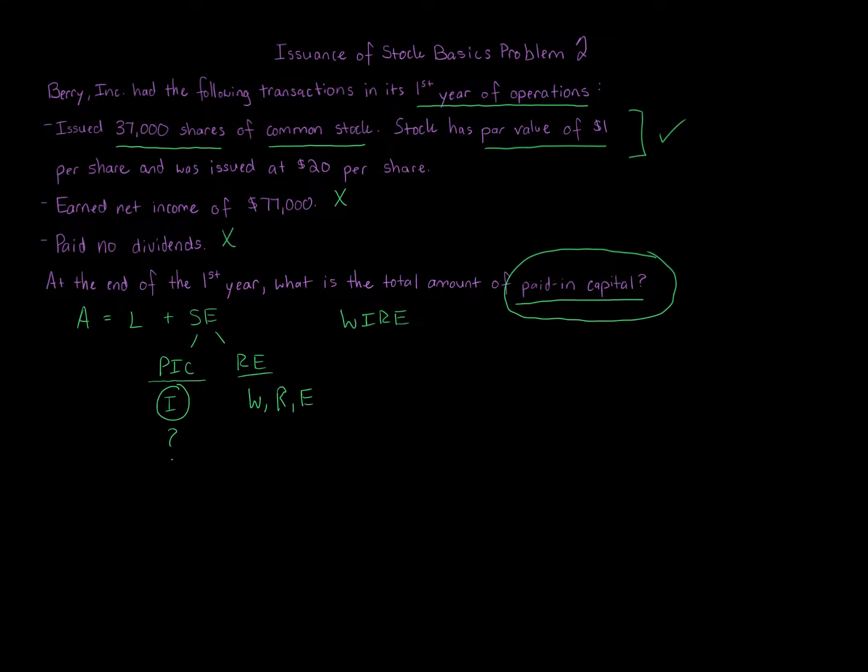$19 per share times 37,000 shares—that's the paid-in capital in excess of par for common stock. This question is not asking about the in excess; it's just asking for the total paid-in capital amount. So all we have to do—this is really simple.